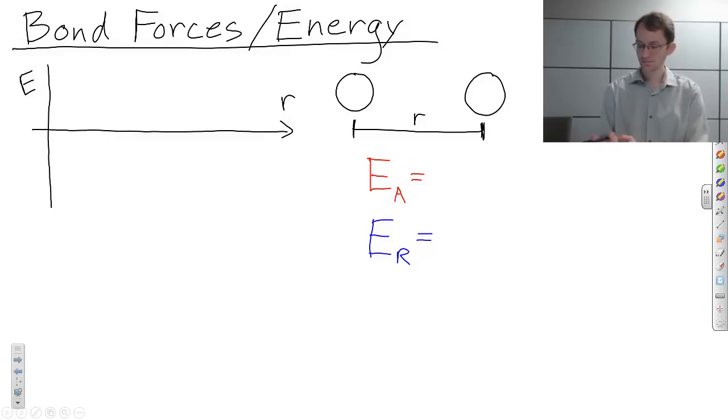So the attractive energy takes the form c1, your book uses a I believe, over r. In this case, c1 or a is just a constant, it's a constant number. Whereas the repulsive force takes the form c2, in your book they use b, and that is over r to the n. So r, the repulsion is to the n.